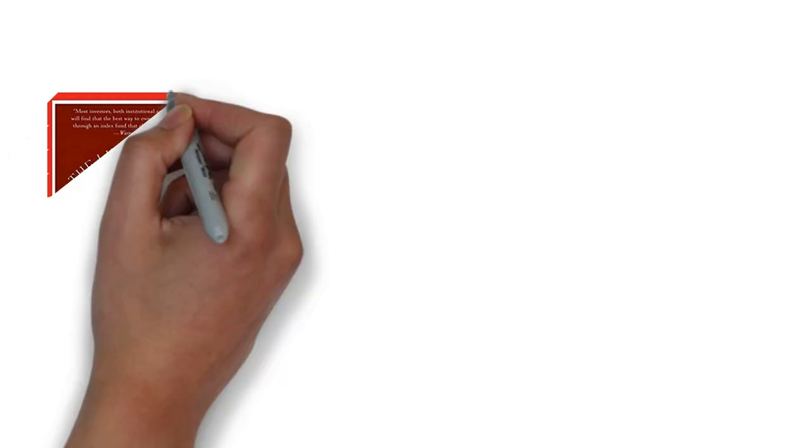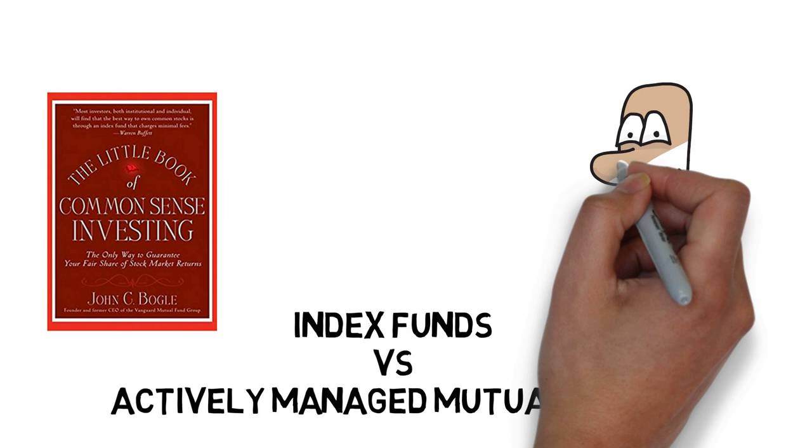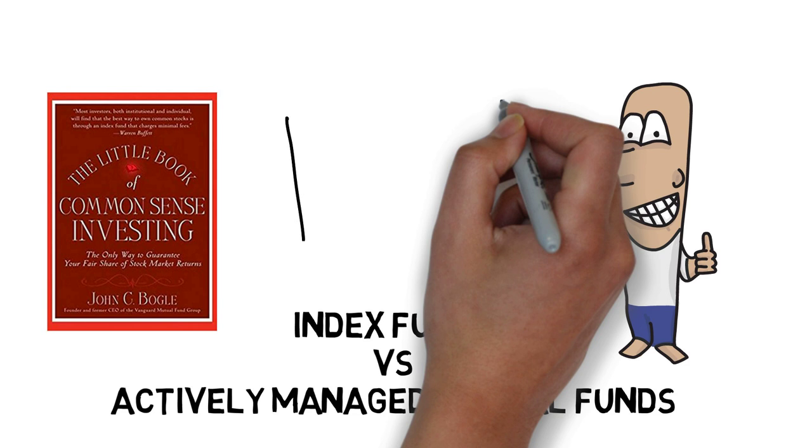Written by the founder of Vanguard, John Bogle, the little book on common sense investing explains the benefits of investing in index funds instead of actively managed mutual funds. Copyrighted in 2007, it contains timeless common sense approaches to guarantee your fair share of stock market returns, instead of speculating on receiving high returns from actively managed mutual funds that usually come at a premium.